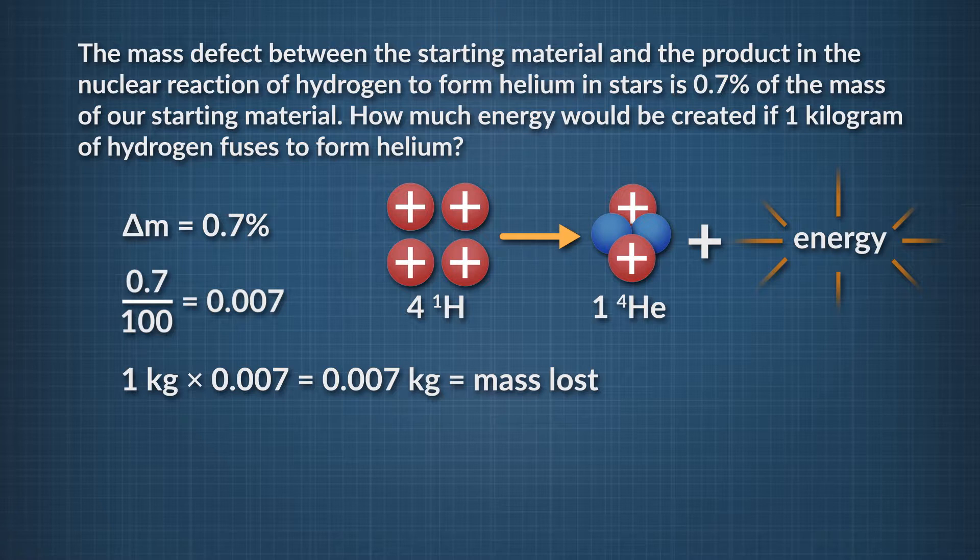So, binding energy is equal to mass defect times the speed of light squared. We substitute in the mass from above, 0.007 kilograms, and the speed of light for c, which is 3 times 10 to the 8 meters per second. And then we square it.